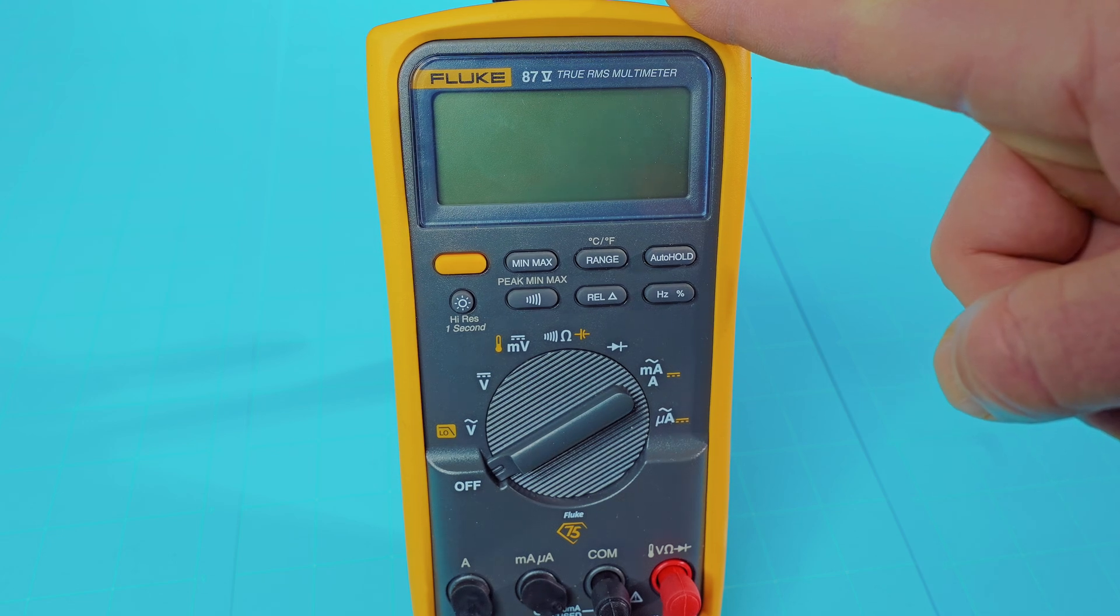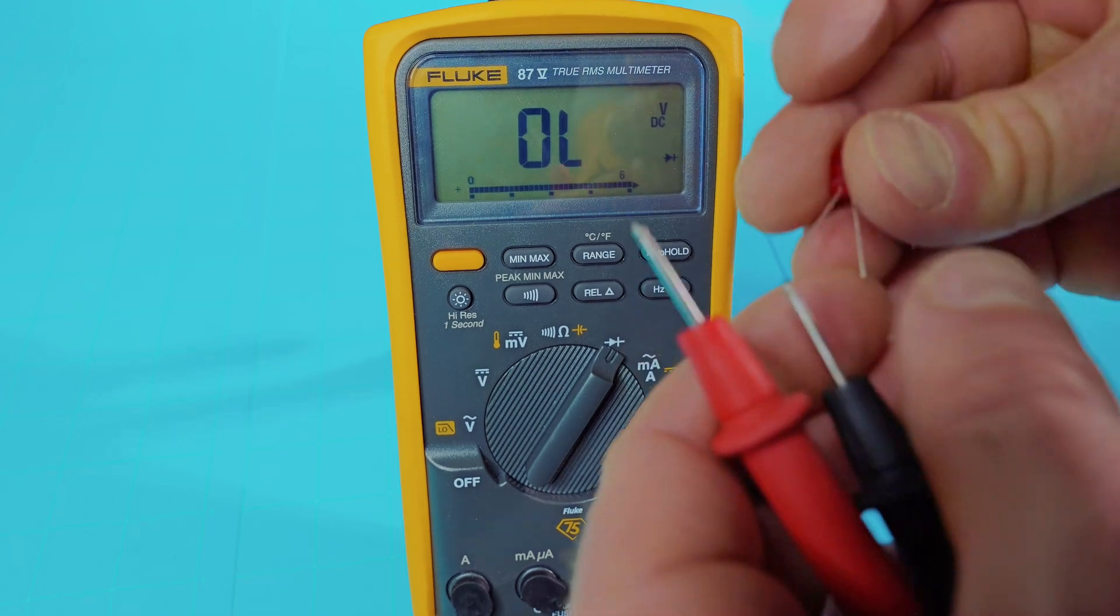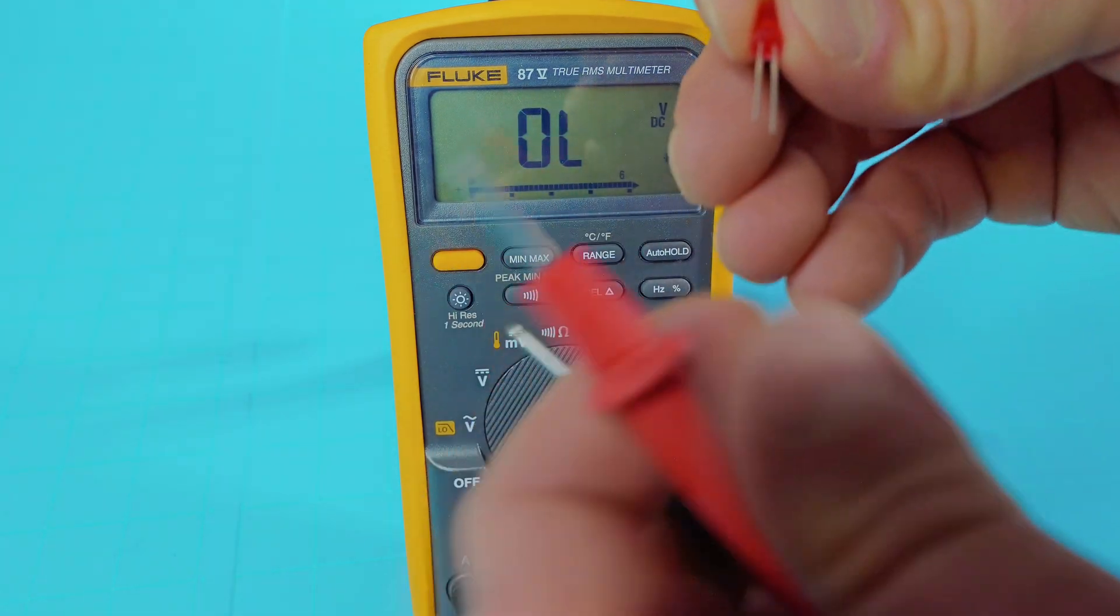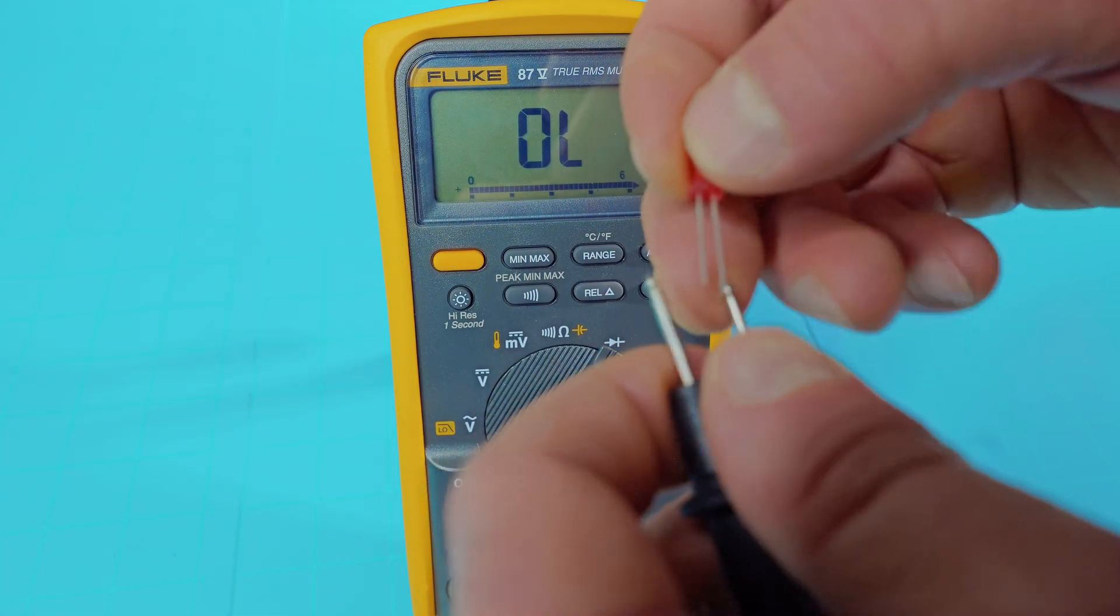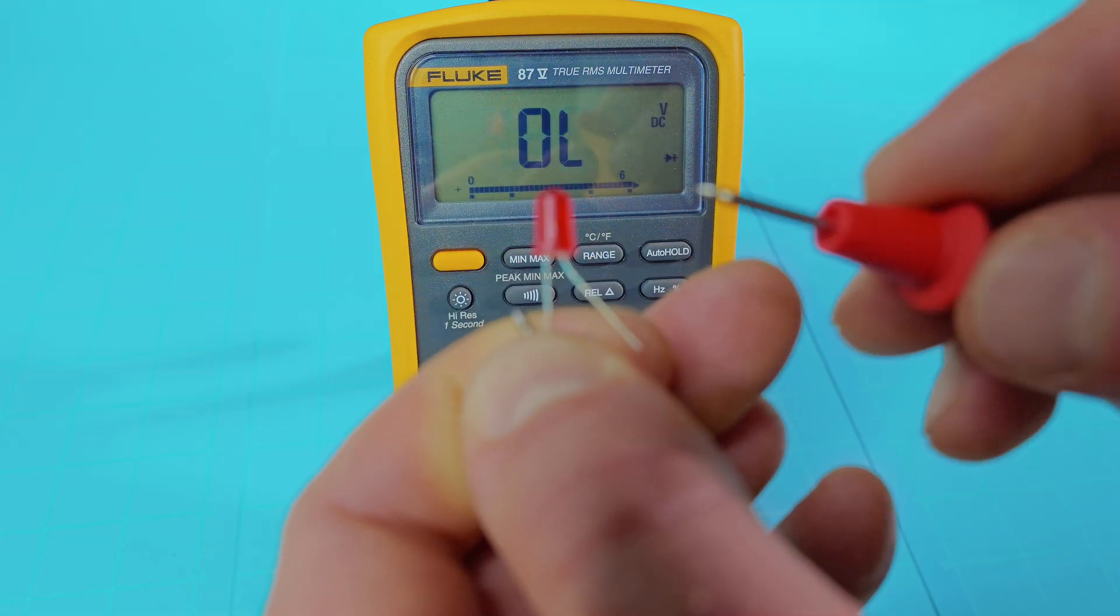And it's actually the exact same method as the Fluke 101. So we'll go ahead and put it to the diode mode here. Again, your black lead is going to go on your shorter LED lead, and the red lead on your longer. And you can see there, it does light up.